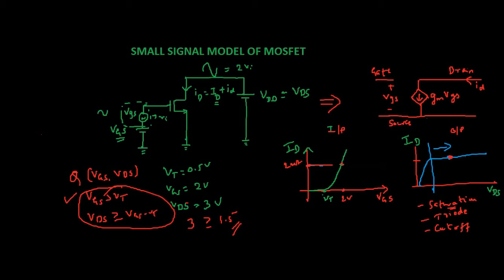As you can see, this is the flat characteristic region after some point — this is the saturation region. You cannot determine this from only the input characteristics; you have to look at the output characteristics as well. VGS should be greater than VT, which you can see here. We should be operating in this region as well as this region for the MOSFET to be in saturation mode. So the operating point depends on VGS and VDS: if VGS was 0.4 volts, the operating point would be somewhere else.